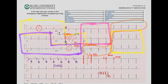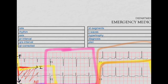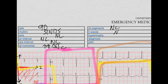So let's figure out what exactly is going on here. We said the rate was about 90, it was sinus, the axis was normal, the PR was normal, the QRS was normal, the QTc was prolonged, ST segments were normal, and T waves were normal. So our diagnosis is a prolonged QTc. You're going to need to check some electrolytes and correct those, and make sure there aren't any drugs that are going to increase the QTc — we worry this person could go into torsades otherwise.